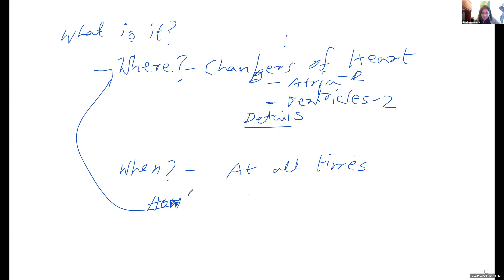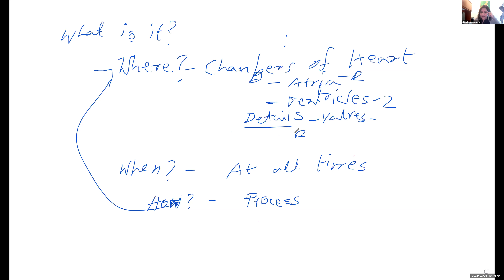The 'how' is where you describe the process. Use your own language as much as possible, but keep the terminologies intact — atria, ventricles. The details include which valves are present, which blood vessels are involved. This is what anatomy and physiology is: you incorporate the anatomy so that you can understand the physiology. That's how all of this together produces the cardiac cycle.